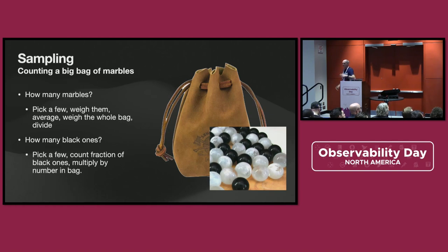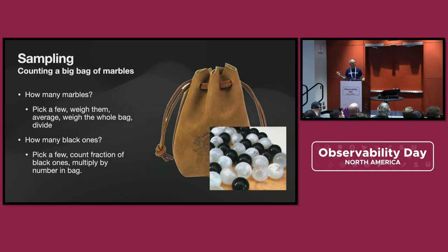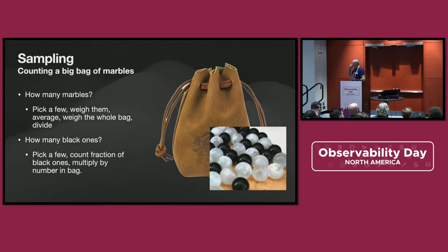Imagine you have a big bag of marbles, and you want to know how many marbles are in it. You're going to pick a few of them, weigh them, and then you weigh the bag, you weigh the handful you have, you count the handful you have, and then you can calculate the ratio and get the weight of the bag. Now you want to know how many black ones are in that bag. You pick a random sample and count the fraction of those you sampled compared to how many you believe are in the whole bag, then multiply by that number, and you will get a reasonable approximation.